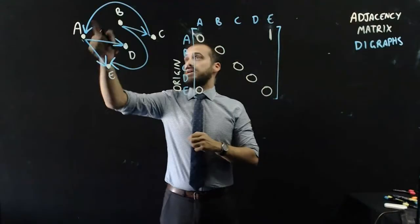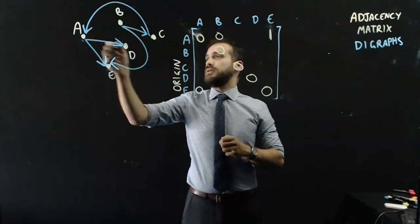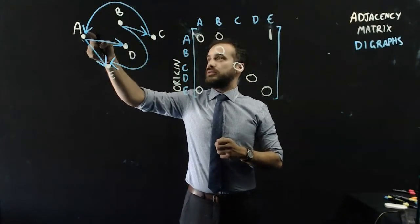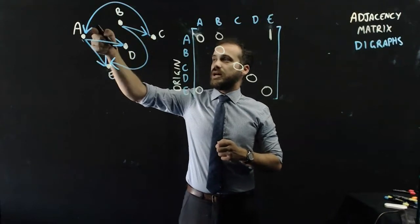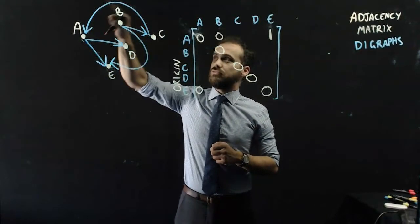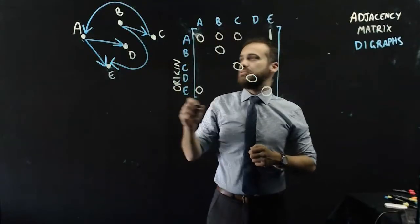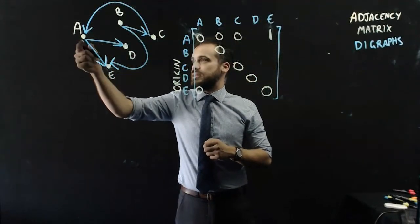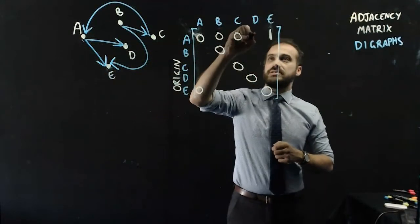A to B, no eating. A to C. So A to C is a zero. We can't get from A to C because it's a directed graph. And A to D, yes, we can go from A to D, so that's a one.